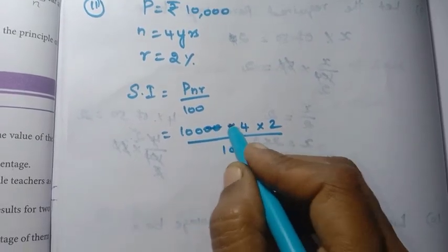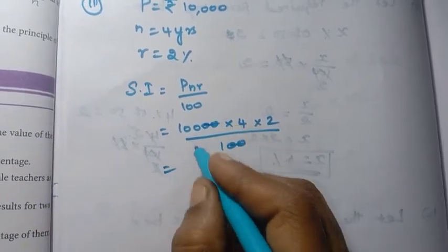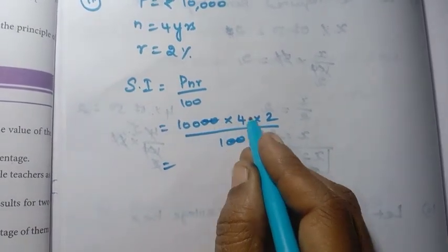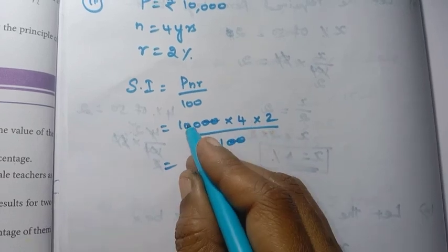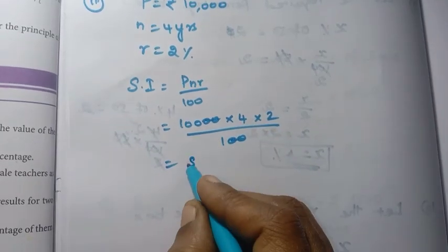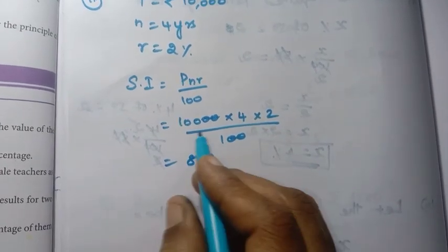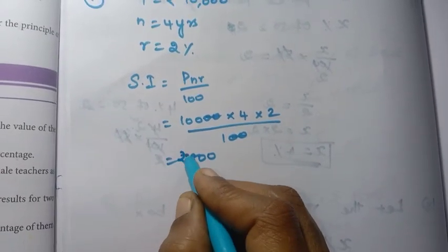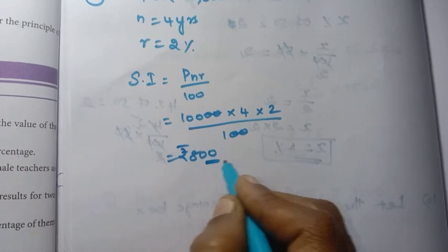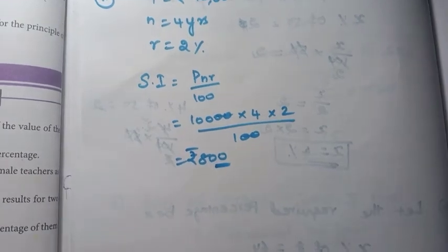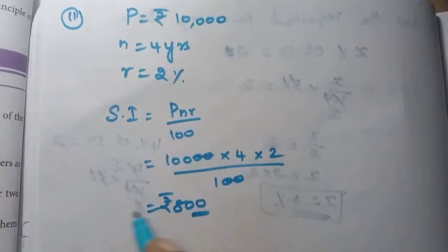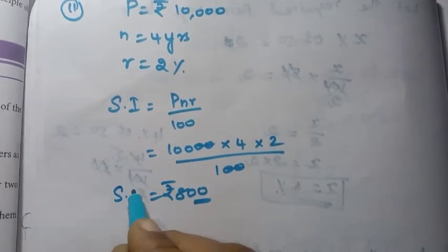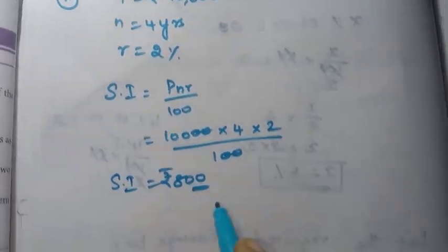Using the formula SI = PNR/100: SI = 10,000 × 4 × 2 / 100. The zeros cancel, giving 4 × 2 = 8, so Simple Interest = Rs. 800.